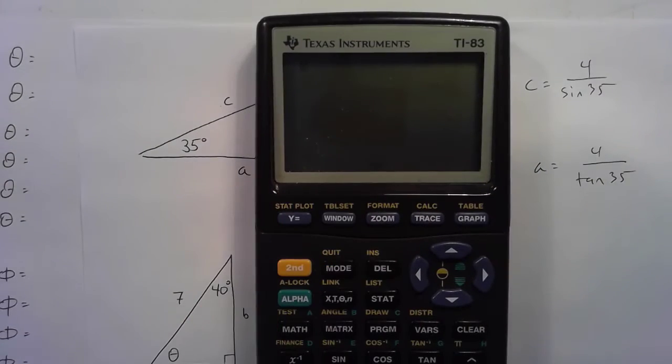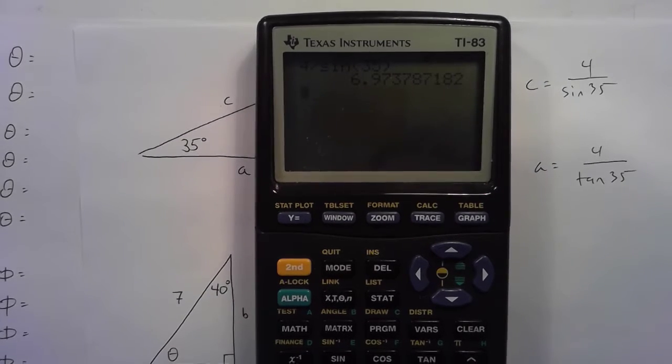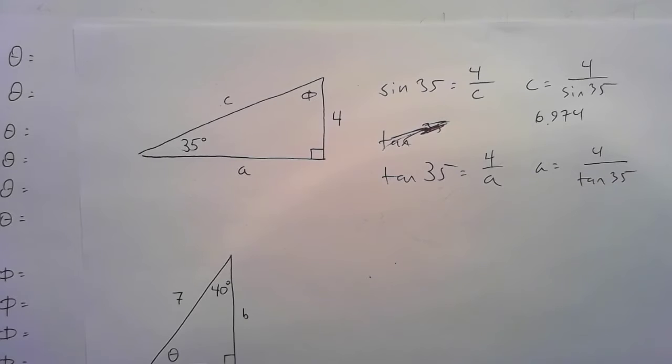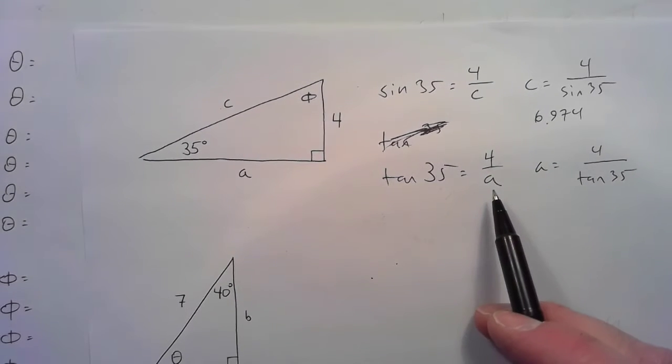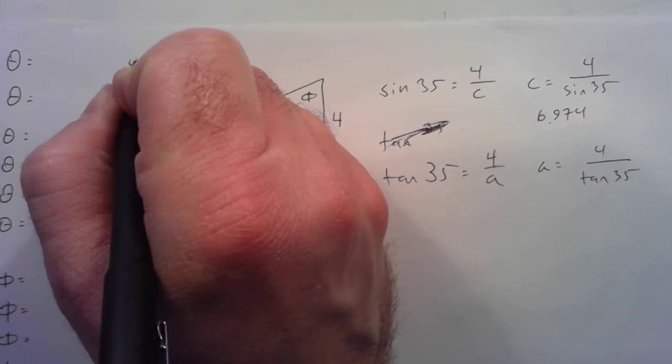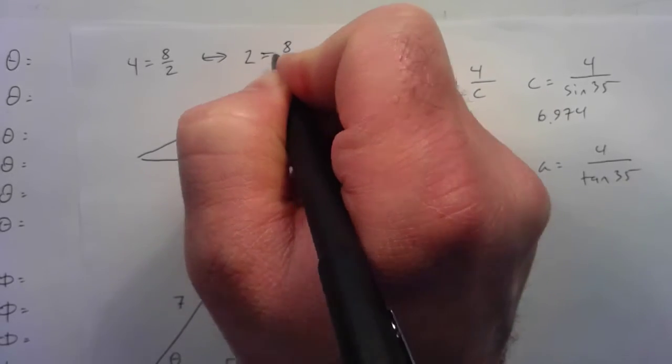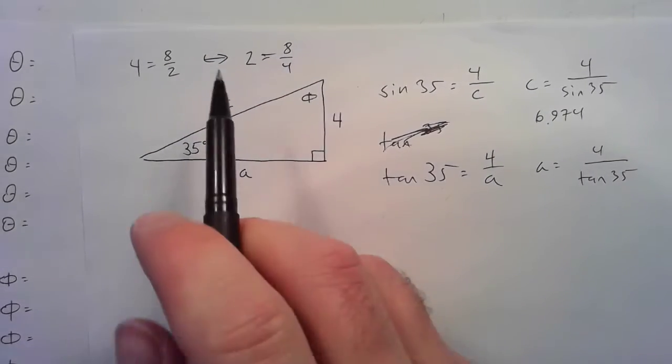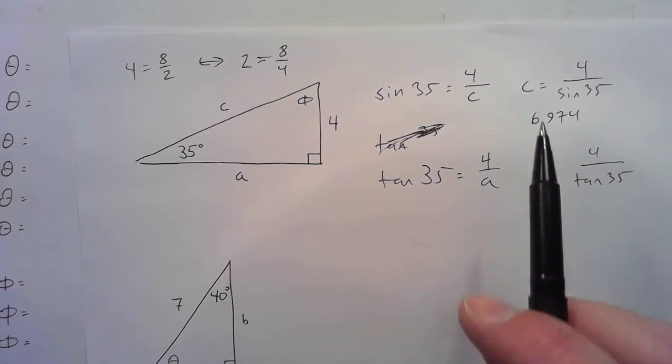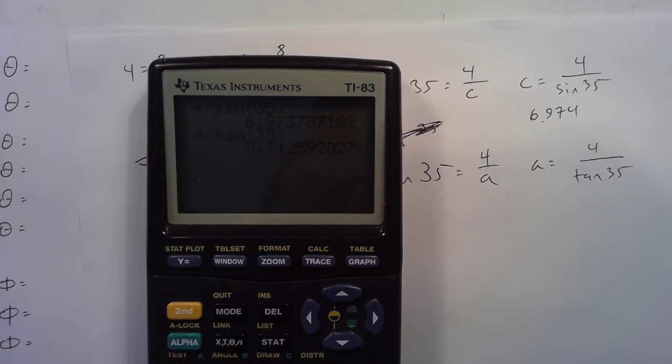So right there, there's two values that we could possibly get solving for these. C would be equal to 4 over the sine of 35°, and this A would be equal to 4 over the tangent of 35°. So let me just go ahead and do those. Four divided by the sine of 35 degrees, 6.974. For A, that'll be four divided by the tangent of 35 degrees, and that's 5.713.